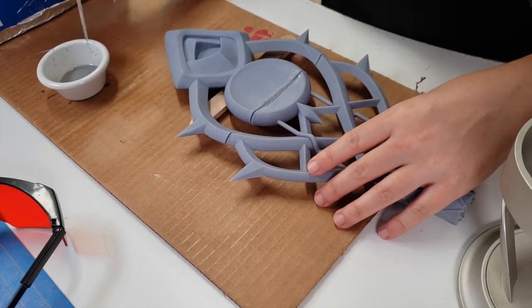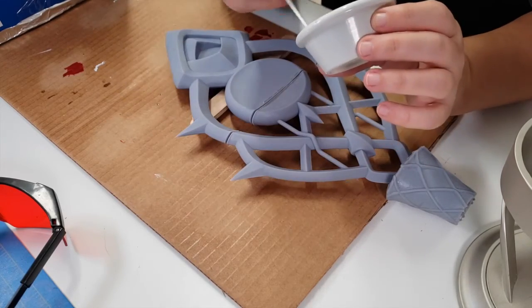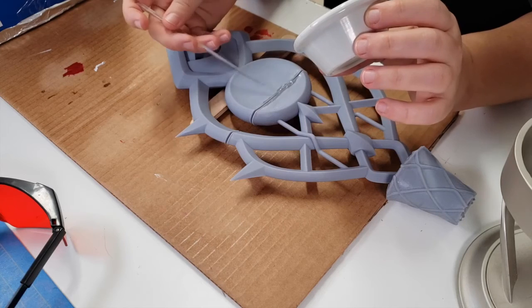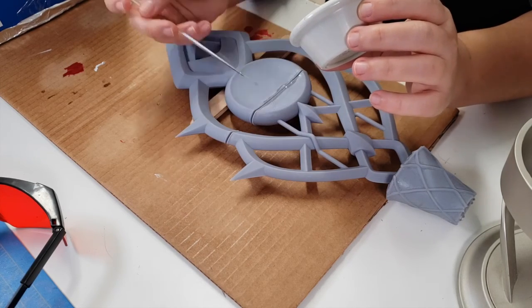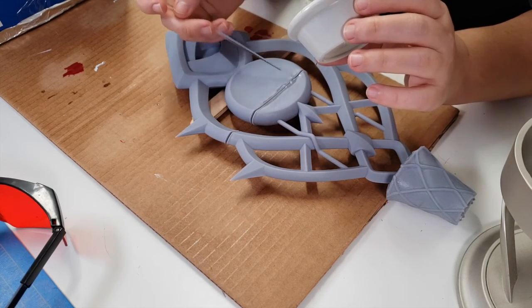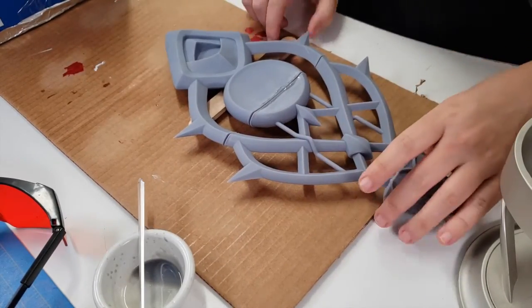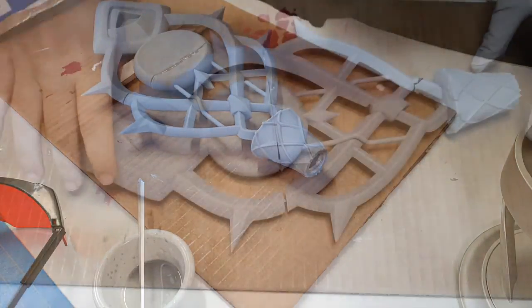I did go back and forth a lot between doing a little bit and then curing it, and a little bit and curing it. If you add too much on and it doesn't give it time to cure it tends to just run and get a little globby. So I like to do it in layers instead of just a lot at once.